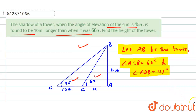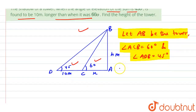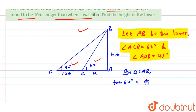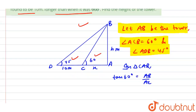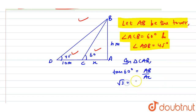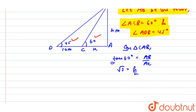In triangle CAB, we can say that tan(60°) equals AB divided by AC. So we have √3 equals h divided by x. Since tan(60°) is √3, this implies that x equals h divided by √3. We'll call this Equation 1.